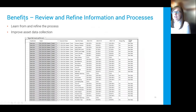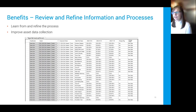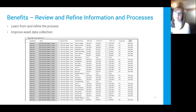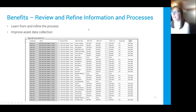The final benefit is that you can review and refine information and processes — learning from the process, paying attention to failure rates and costs of failures, and improving your asset data as you go. On screen is a screenshot for one asset category — towers — showing the data points coming into the model and different populations of data points as new data has been loaded. Software systems are useful in this regard for analytics and making sure you're moving in the right direction with data collection.